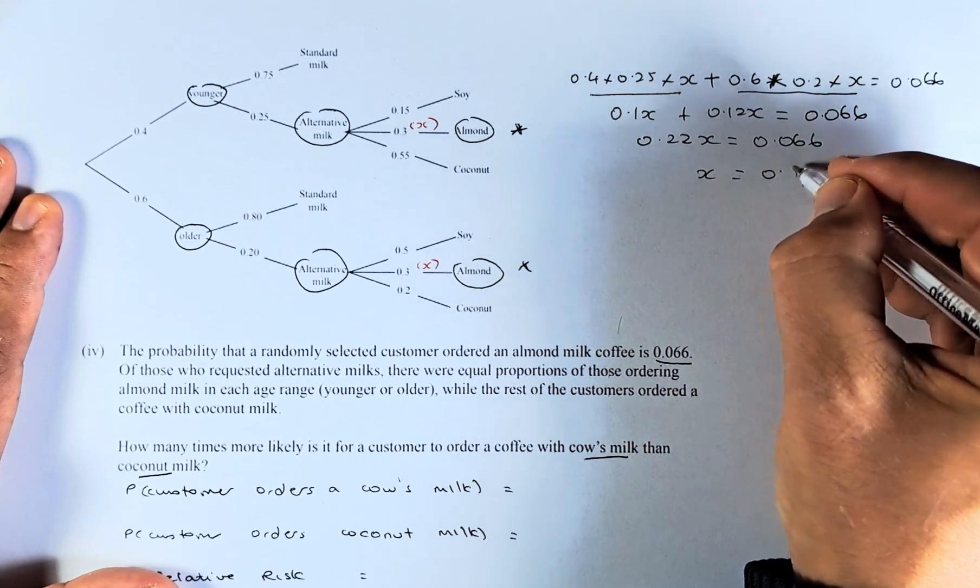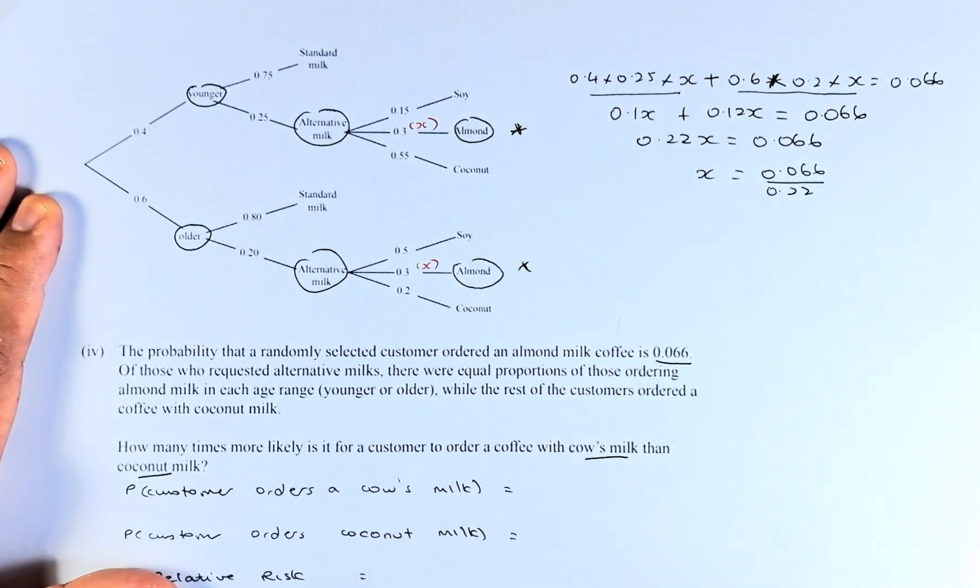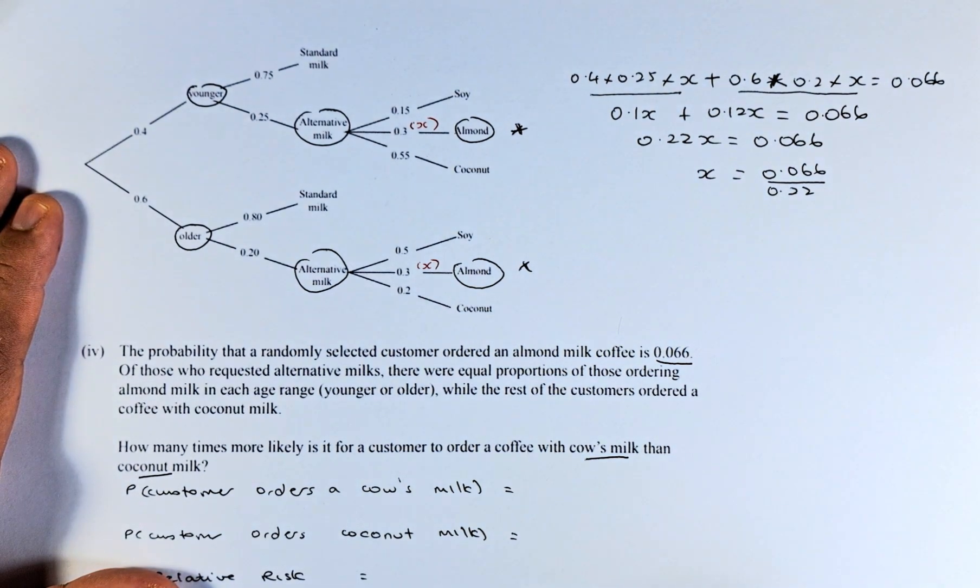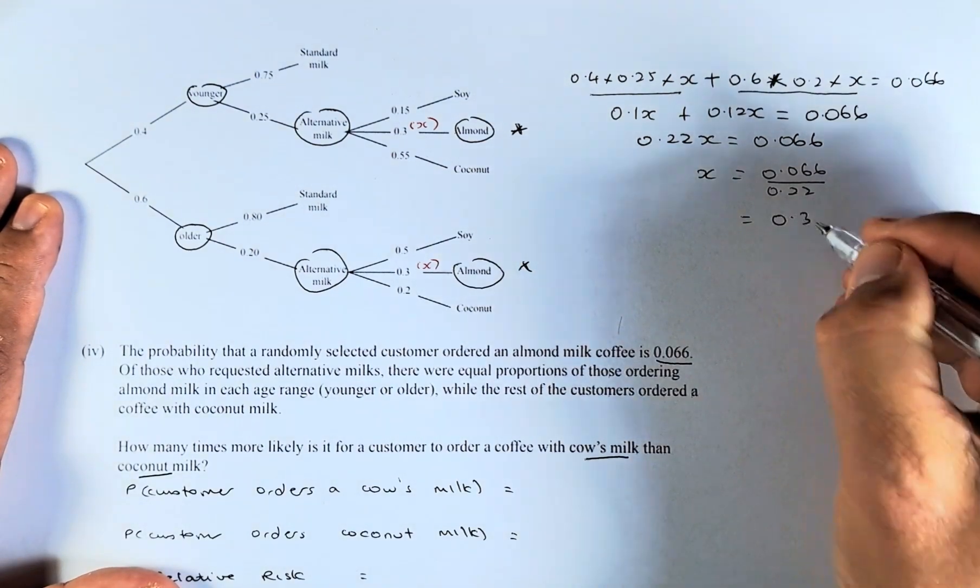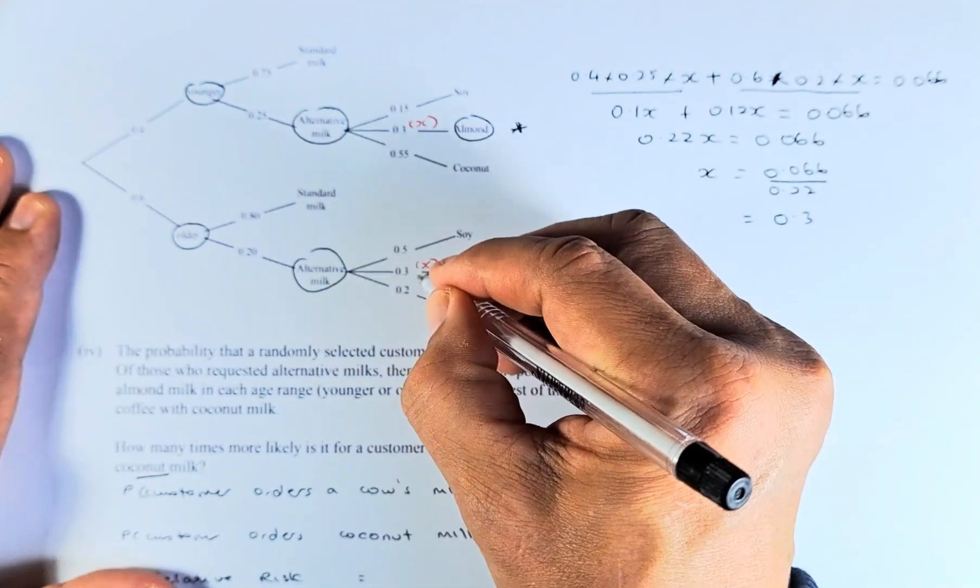x equals to 0.066 divided by 0.22. Put in your calculator and the answer should give us 0.3. Once we know that x is 0.3, put in 0.3 and 0.3 there.